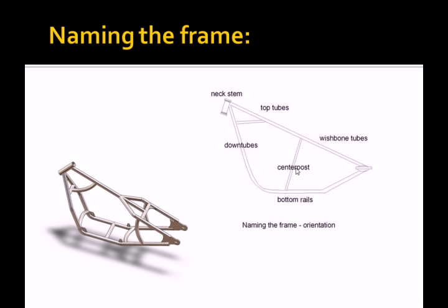When the two pieces that make up the wishbone tubes are welded together, they are shaped like a wishbone. The top tube, or backbone, runs from the wishbone tubes to the neck stem and is welded to both.